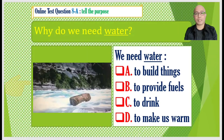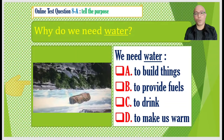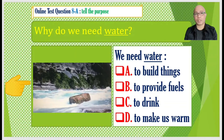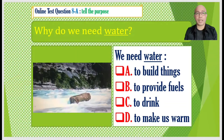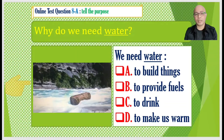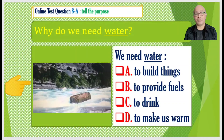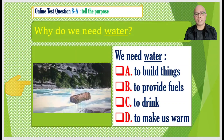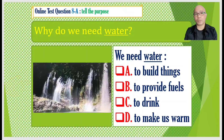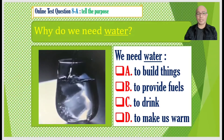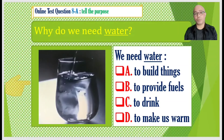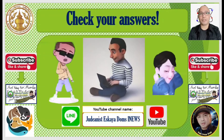Practice test number eight: Why do we need water? We need water — A to build things, B to provide fuels, C to drink, D to make us warm. Now it's time to reveal the answers. Let's check.